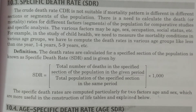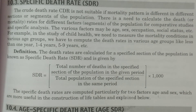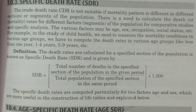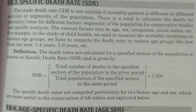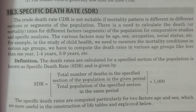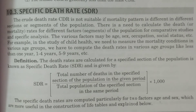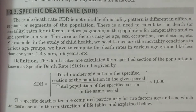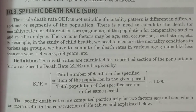Specific death rate is calculated for a specific section of the population in a given time period. It can be further calculated for different age groups or sex-wise - male and female - with different kinds of factors considered, which I will discuss in the next class. In this class, I have explained crude death rate CDR and specific death rate SDR. Two more death rates are there, which I will discuss in the next class. Thank you.